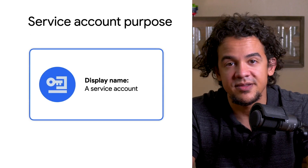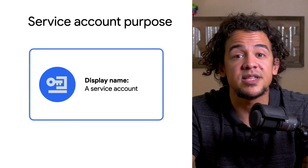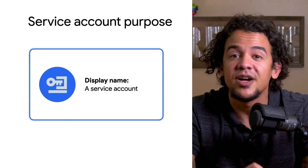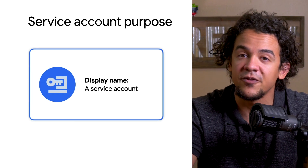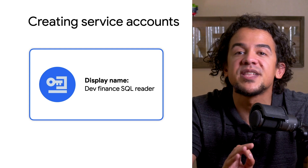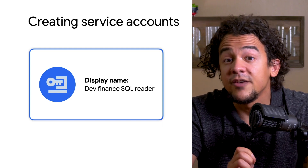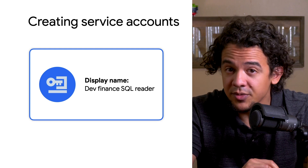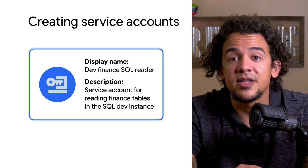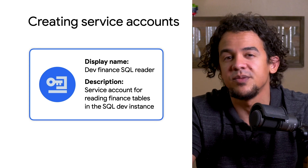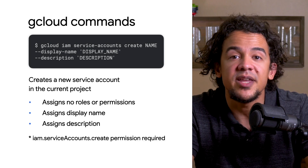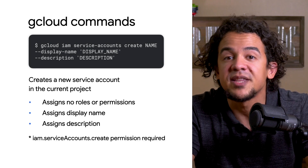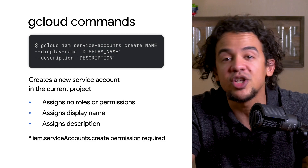Every service account should have a purpose. One of the best practices you could follow is to make sure a service account's purpose is clear to you and to any other administrator that might inherit your project in the future. So when you create a service account, make sure that you include a descriptive display name. If you want to take it a step further — and I recommend that you do — you can include even more details and context in that service account's description. Make it a habit to figure out a meaningful display name and description on creation by tacking on the display name and description flags to your gcloud command.